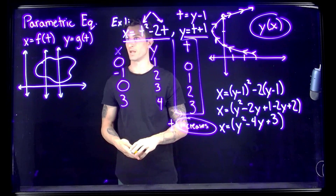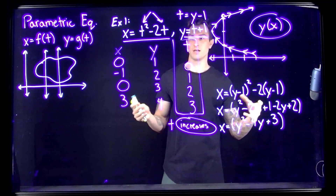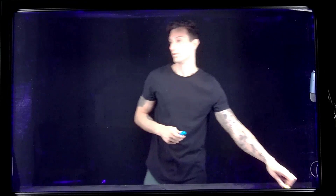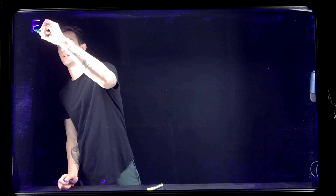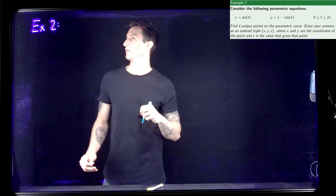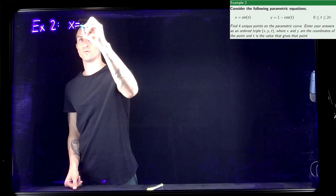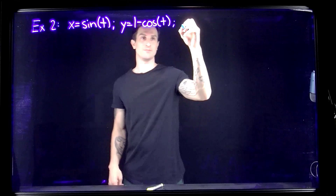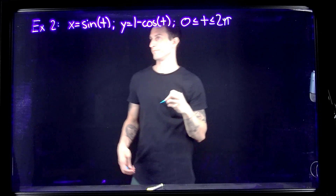That takes care of Example 1. For Example 2 we're going to do something very similar, but we're going to reintroduce trig. We'll say x is equal to sine of t, and y is equal to 1 minus cosine of t. We'll limit t to be between 0 and 2π — one full revolution.